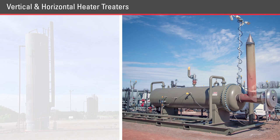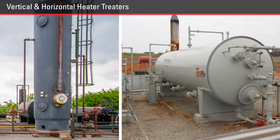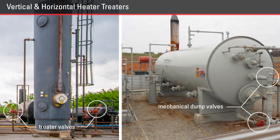On the other hand, a producer may specify a horizontal treater if they need to handle higher volumes of fluid. The burner tube in a horizontal treater has more surface area that comes into contact with the emulsion, which allows a higher flow rate than vertical treaters. Notice the Kimray products in both pictures — vertical treaters use treater valves on the oil and water dumps, while the horizontal treater uses mechanical dump valves.